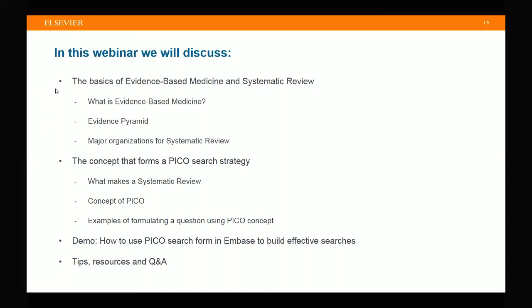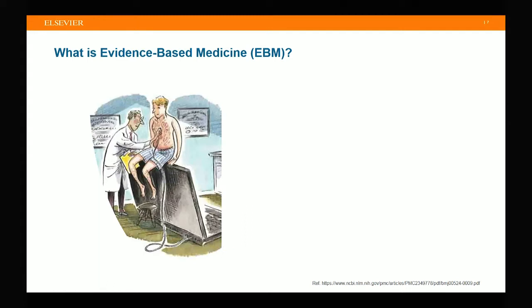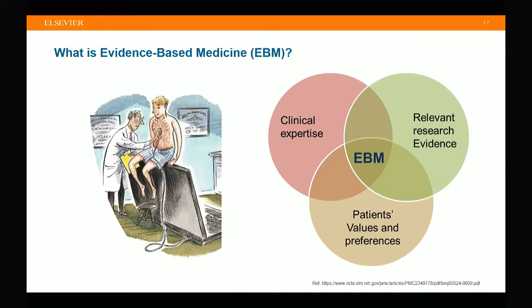To start off, imagine you are a doctor and you have just diagnosed your patient with stage 2 prostate cancer. This patient is 57 years old and not showing any symptoms yet. Naturally, you want to provide your patient with the best treatment and optimal outcome possible. The process of determining the most appropriate medical treatment is what we call the practice of evidence-based medicine, which combines the systematic search for best relevant evidence, the expertise of clinicians in the relevant field, and the patient's values and preferences.